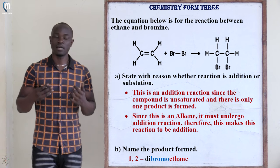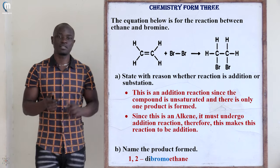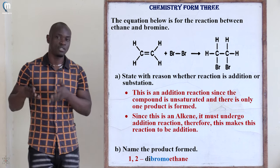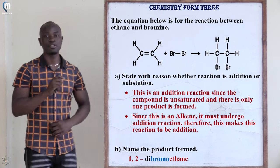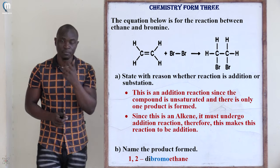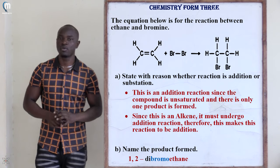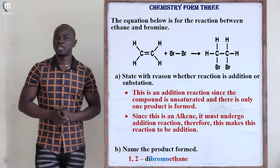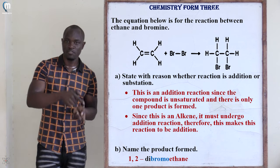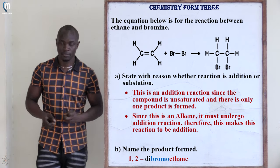Alkenes and alkynes only undergo addition reactions, not substitution reactions. Since this hydrocarbon is unsaturated, the reaction is an addition reaction. The product formed has two bromine atoms — one on each carbon — and is named 1,2-dibromoethane, as we move from the alkene family to the alkane family.